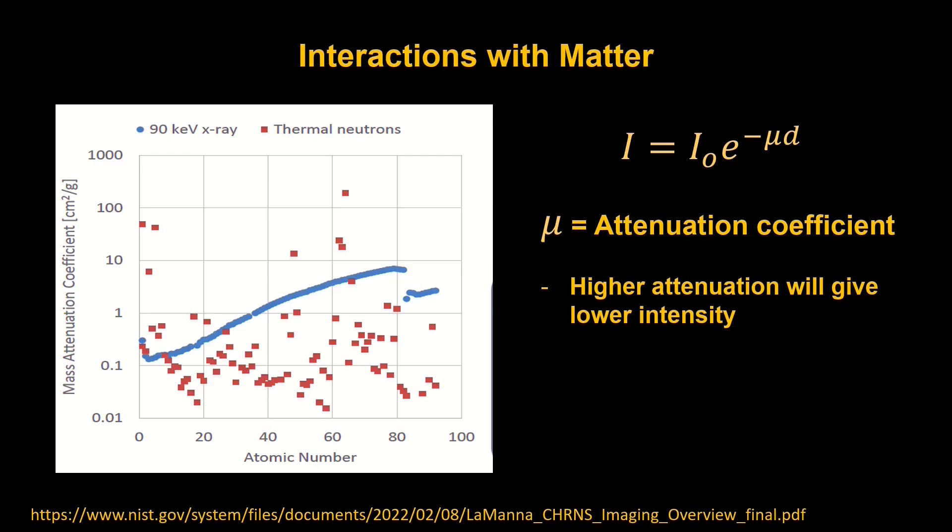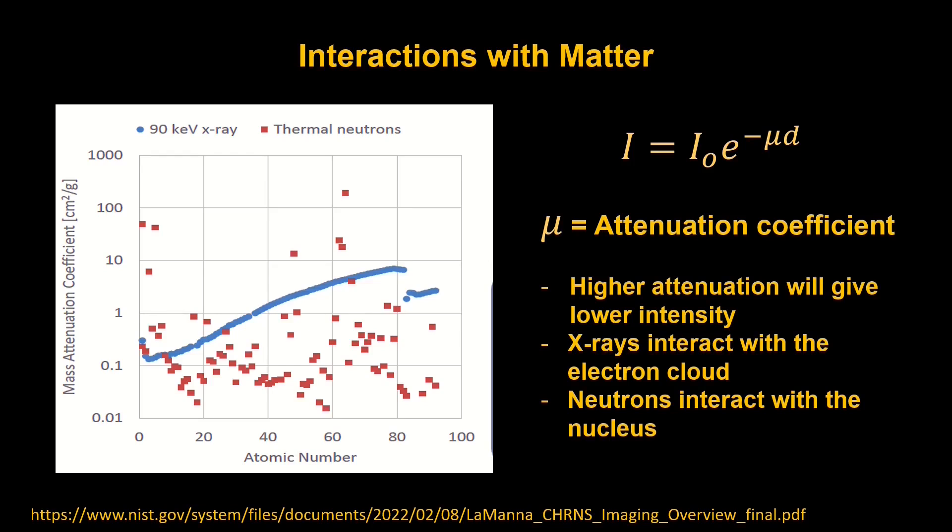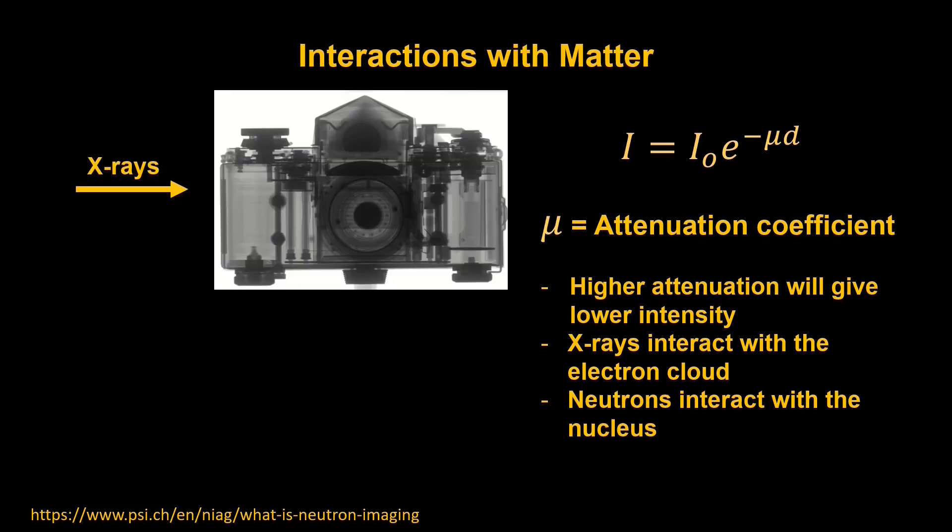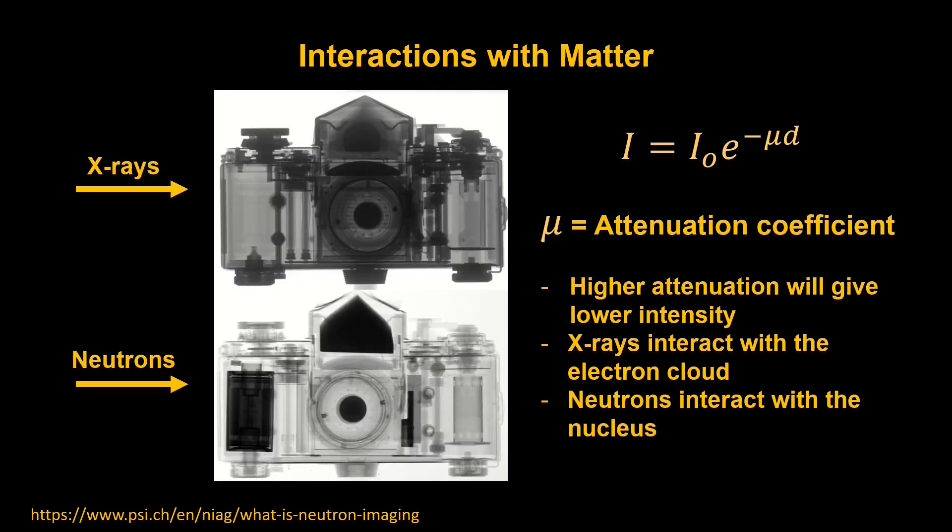The difference comes from how the radiation interacts with the sample. X-rays interact with the electron cloud of an atom, and neutrons interact with the nucleus of the atom. To put it quite simply, X-rays and neutrons just see differently. And as an example of this, I have two pictures of the same camera, one taken with X-rays and the other taken with neutrons. With the X-rays, you can see a lot more detail in the metals.